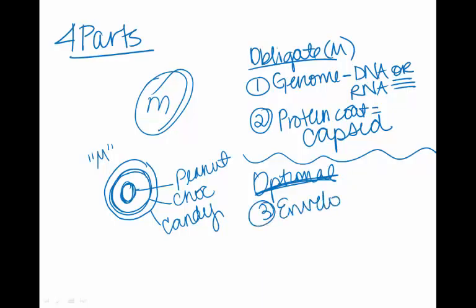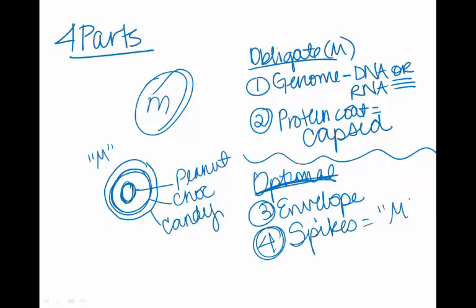So the protein coating called the capsid is basically the peanut and the chocolate. The optional components include an additional coating called an envelope, and what are essentially recognition factors - things that make the virus recognizable by other cells - called spikes. Spikes are like the M on an M&M because you recognize it's an M&M by that M emblazoned on it. So four parts to a virus, four parts to a peanut M&M.